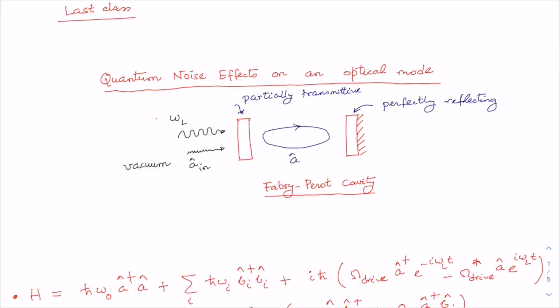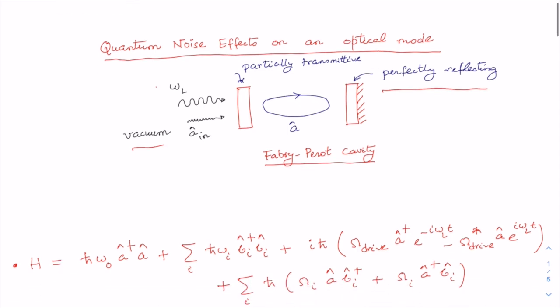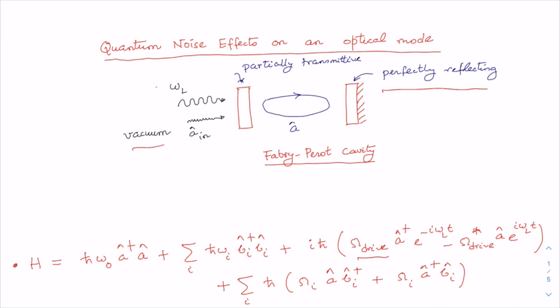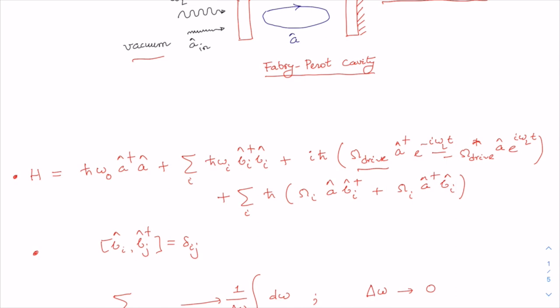In the previous lecture we studied the effects of environment on an optical mode in a Fabry-Perot cavity. We considered a single-sided cavity where one mirror is perfectly reflecting while the other mirror is weakly transmissive. Electromagnetic fluctuations from the vacuum outside the cavity inject quantum noise into the cavity. The cavity is driven by a single-mode laser with drive amplitude omega_drive and laser frequency omega_l. We wrote down the Hamiltonian and went on to write it in the continuum domain, because the vacuum could be modeled as an infinite collection of independent oscillators.